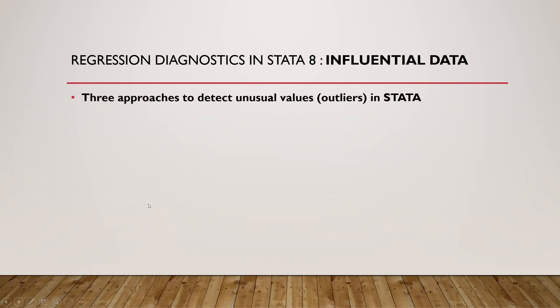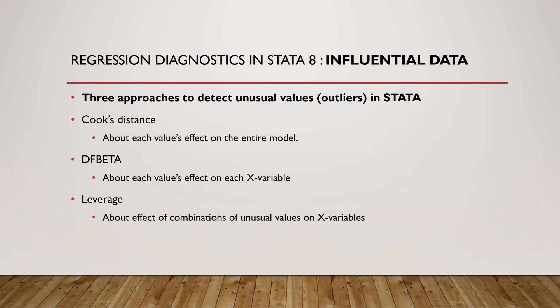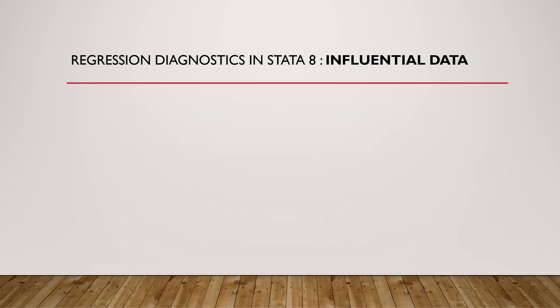We have three ways to check for influential values in Stata. The first approach is the Cook's distance approach, where we want to see the effect of an observation on the entire model. The second approach is to look at the effect of an observation on each of the X variables. The third approach is to look at the effect of the combination of unusual values on the X variables. This video will focus on the first approach, and in the next videos we will cover the rest.